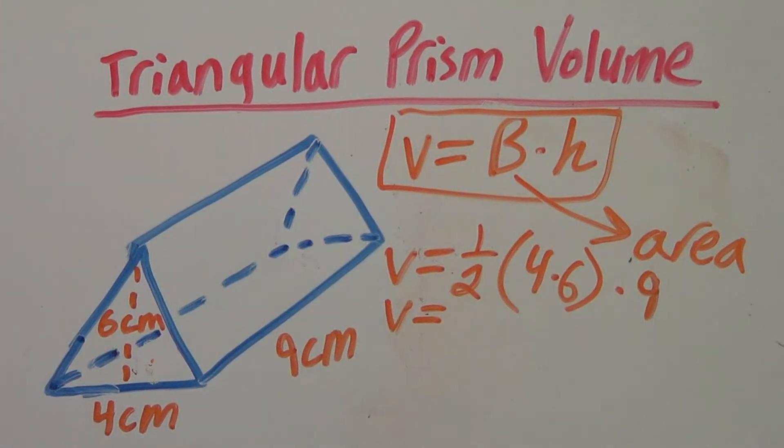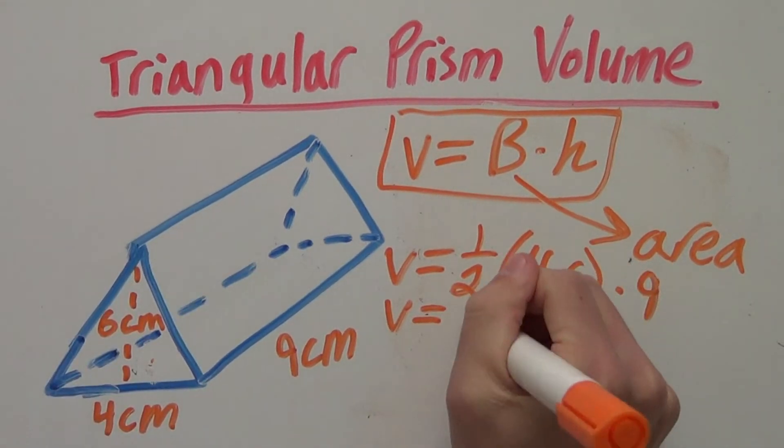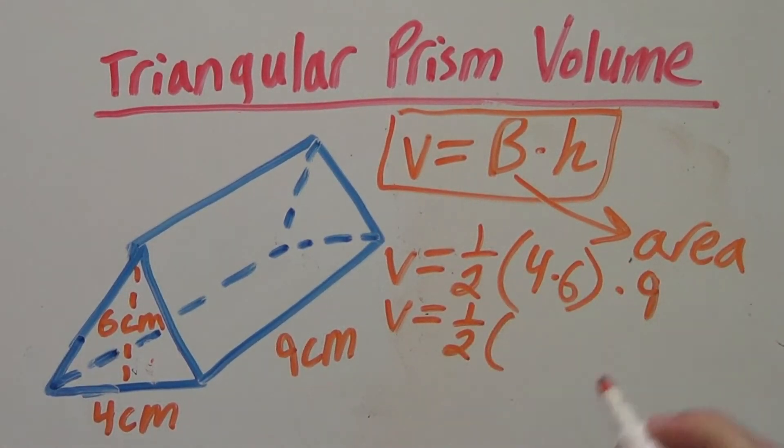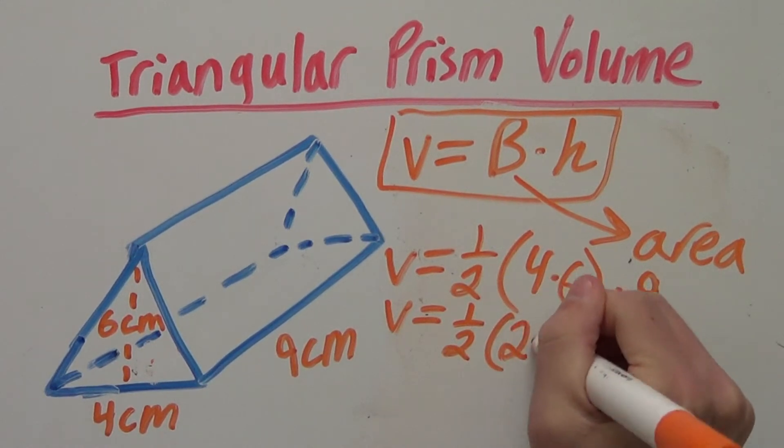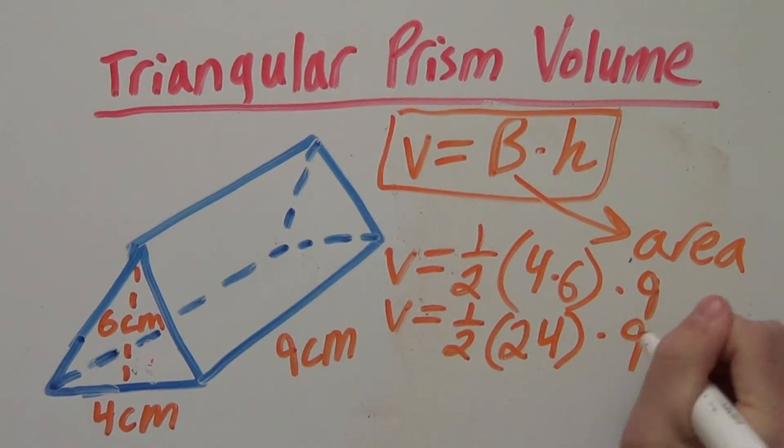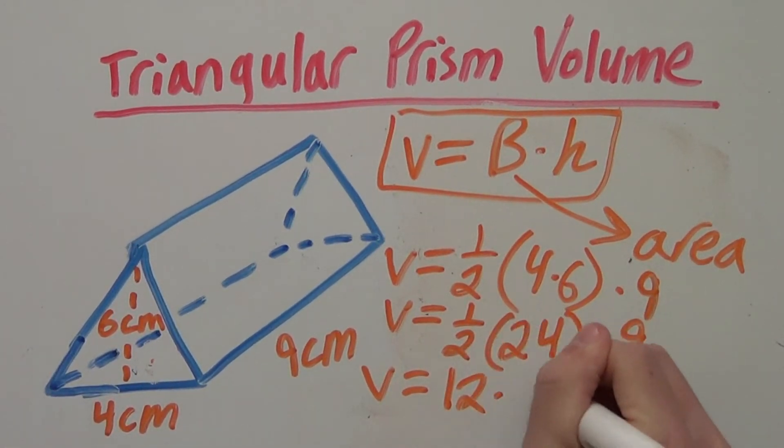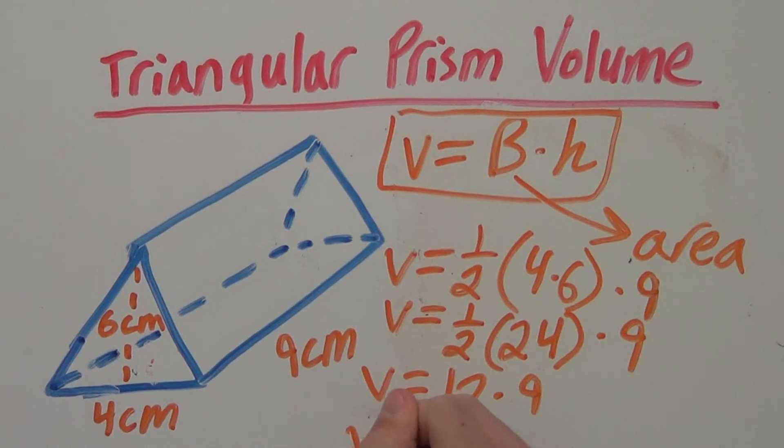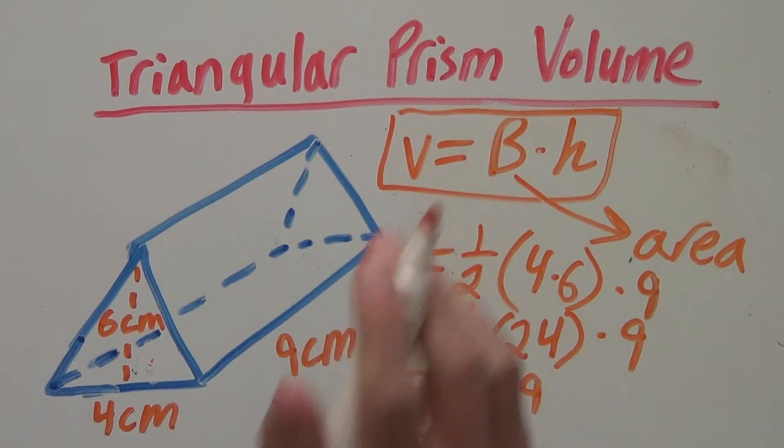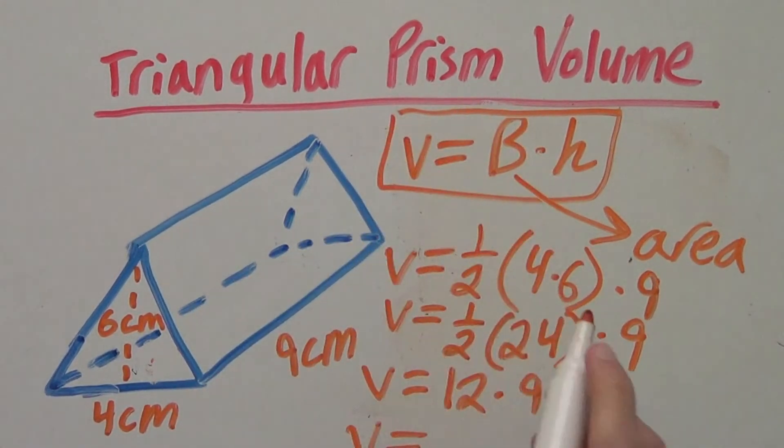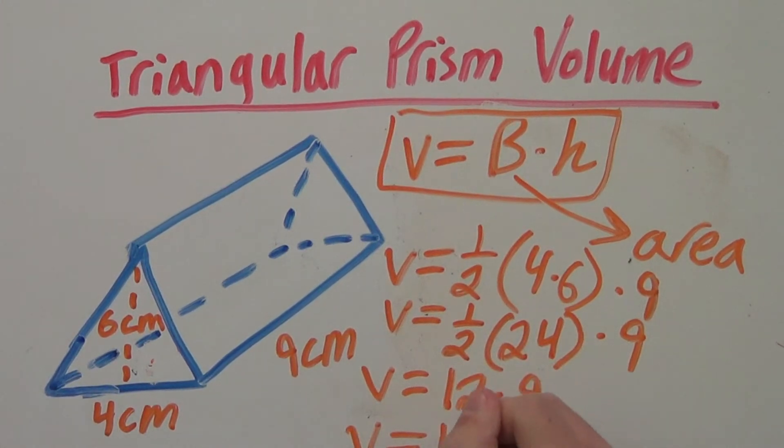Next, if we just work this out, this will give us our answer. So that's 1 half, 4 times 6 is 24 times 9. So volume equals 1 half of 24 is 12 times 9 which means the volume of this rectangular prism is 108.